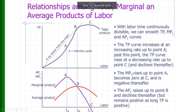The marginal product of labor rises up to point A, becomes zero at point C where the slope of the total product is zero, and is negative thereafter. The average product of labor rises up to point B because the slope of the ray from the origin to point B is the greatest, and after that the slope declines. So the average product of labor rises up to point B and declines thereafter, but remains positive as long as total product is positive.